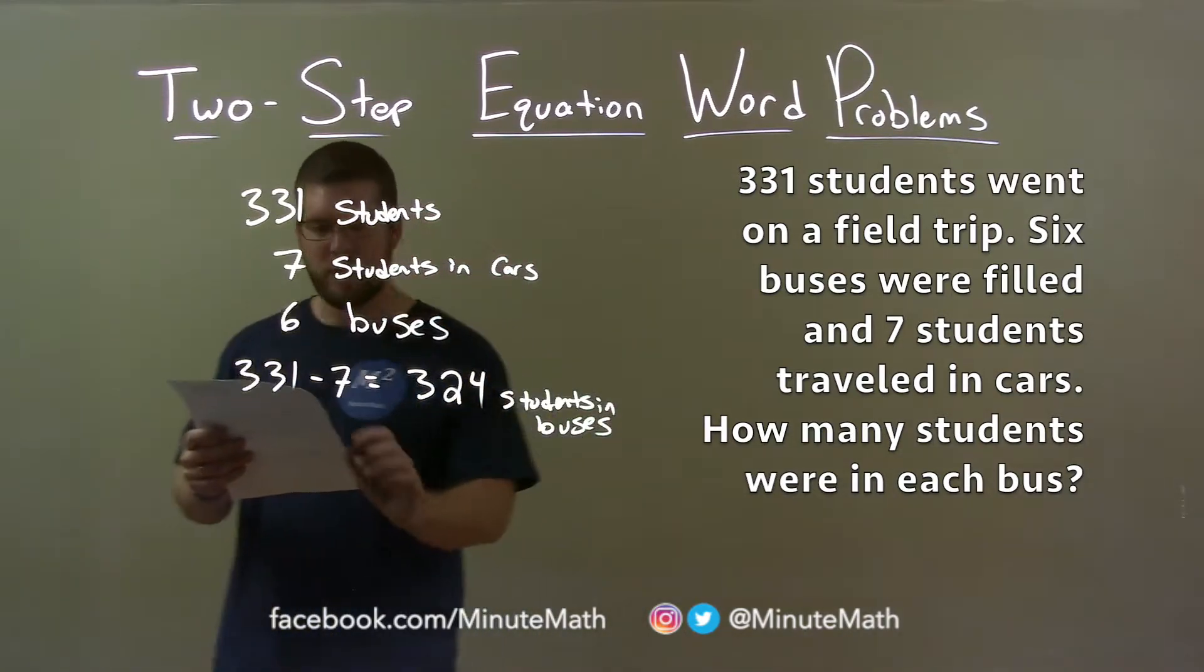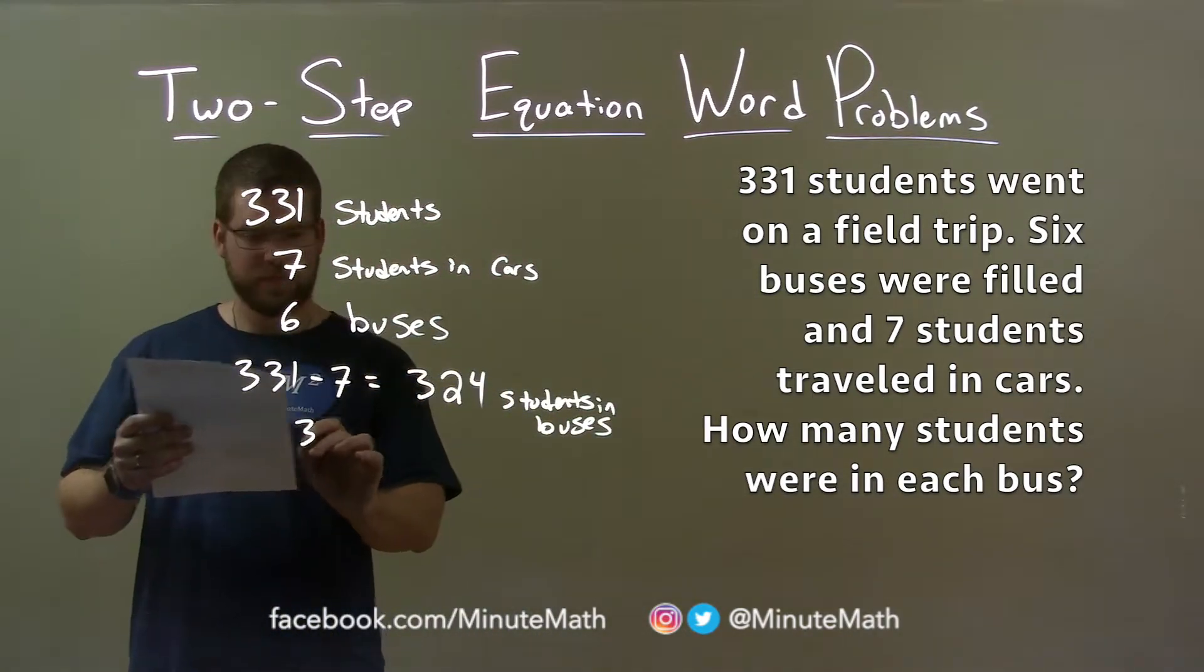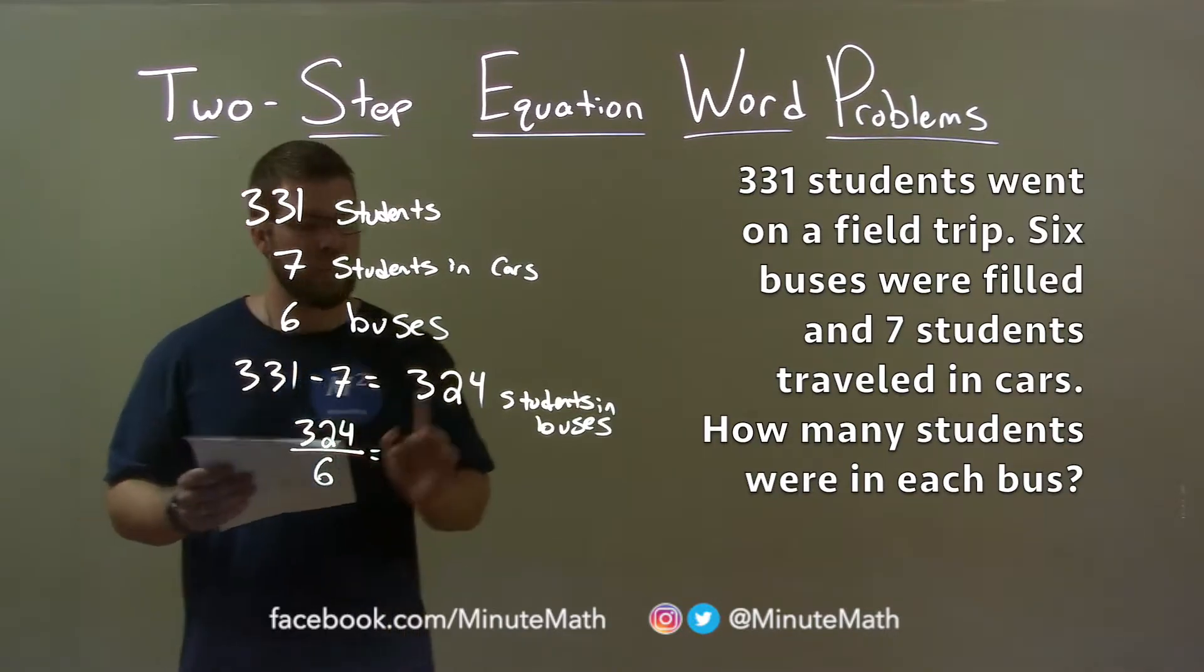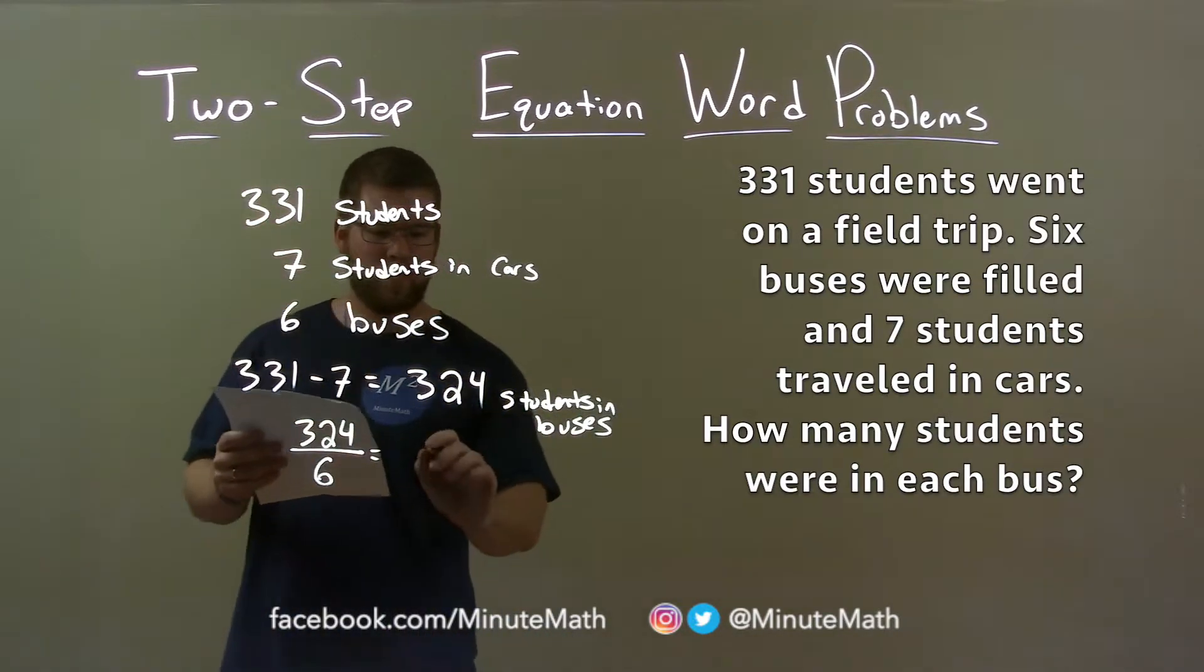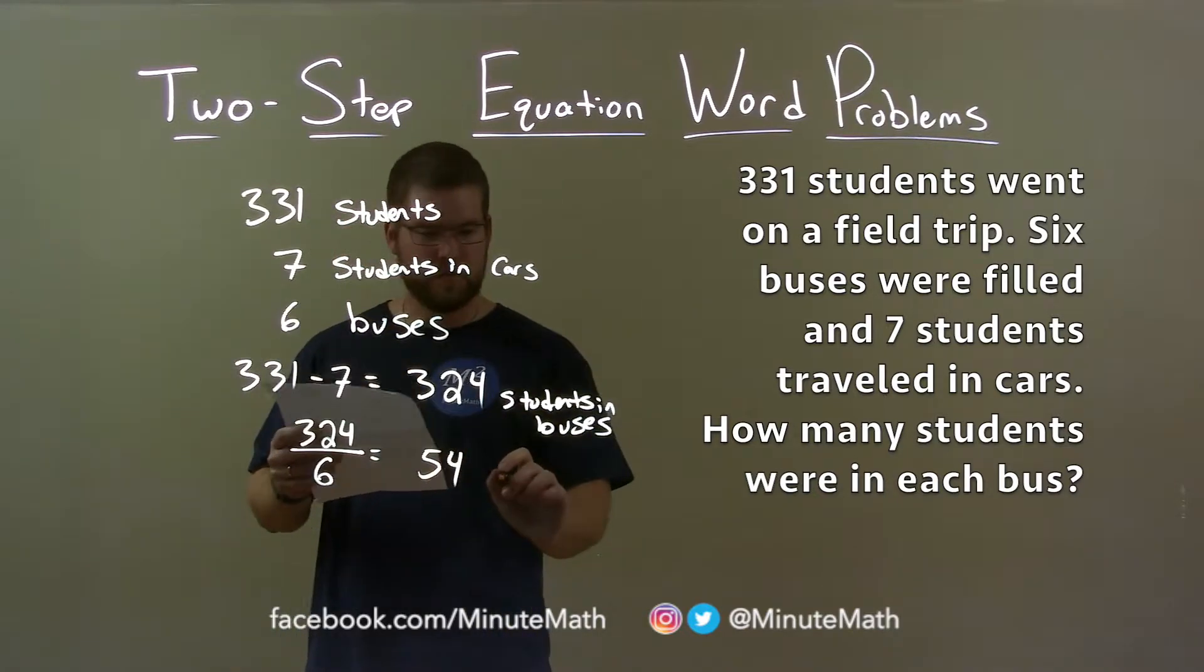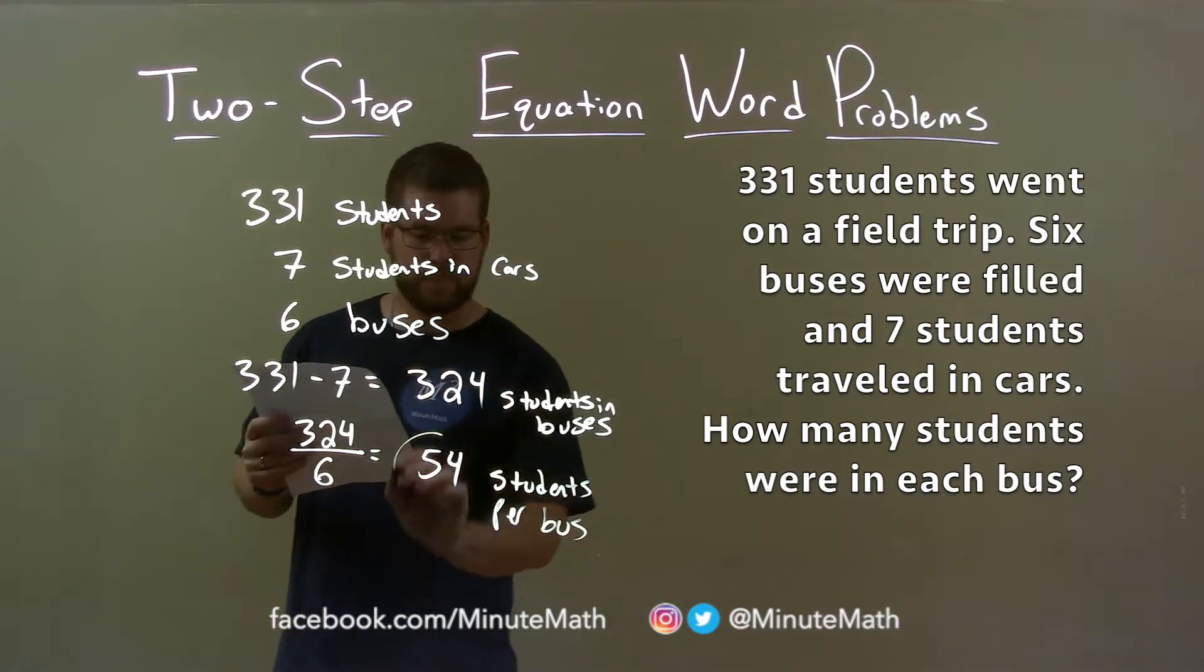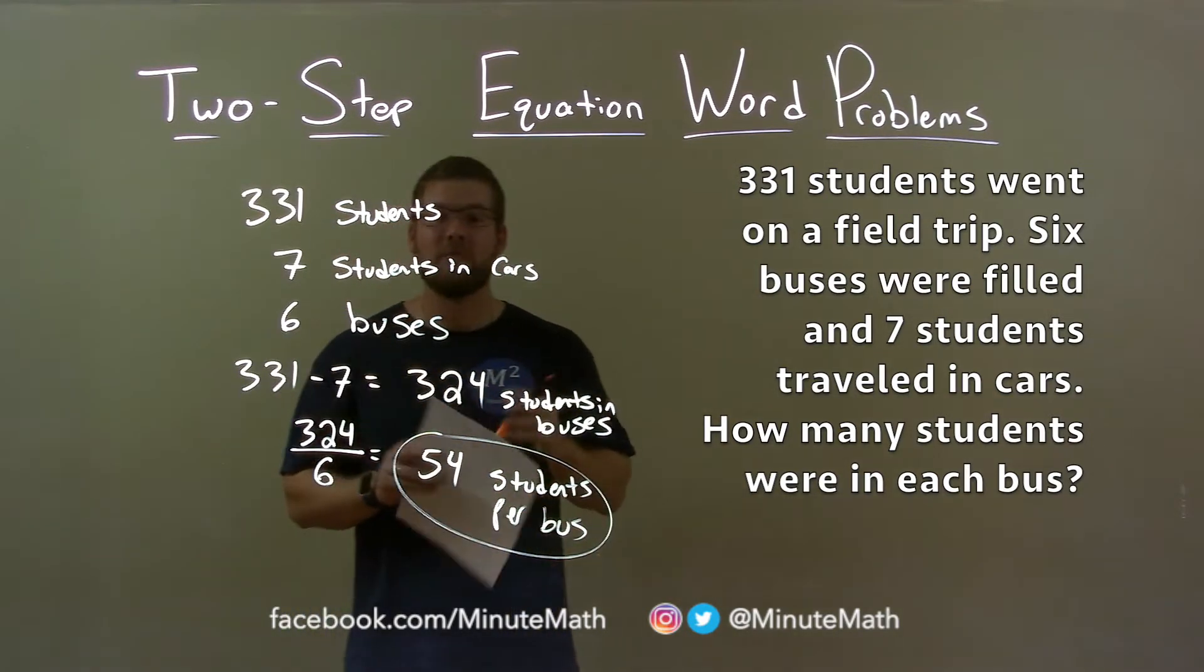If we take that 324 and we divide that by six, the number of buses, we are left with 54, and 54 is the number of students per bus, and there we have our final answer.